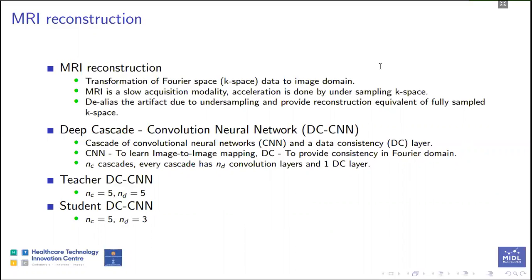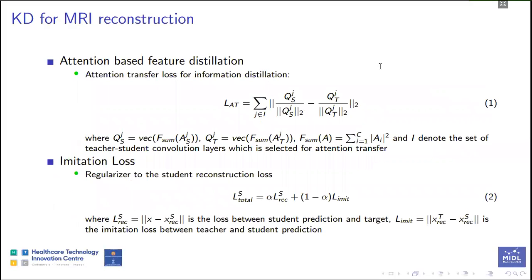For knowledge distillation, the teacher DCCNN has five cascades and five convolution layers. The attention transfer loss, shown in equation 1, is obtained between the channel-summed intermediate feature maps of teacher and student, where the teacher feature map acts as the target. The imitation loss between teacher and student predictions is used as a regularizer with the student reconstruction loss. The total loss is given in equation 2.